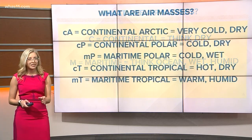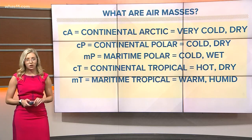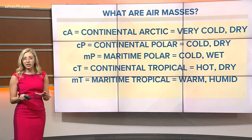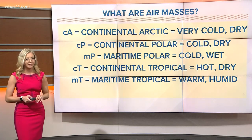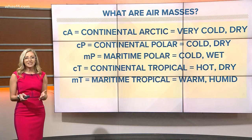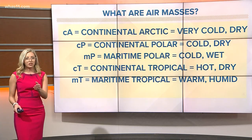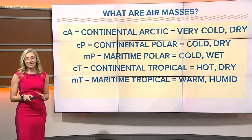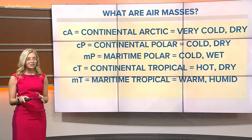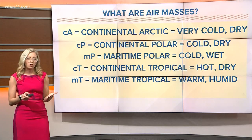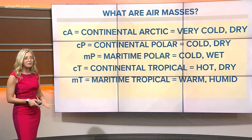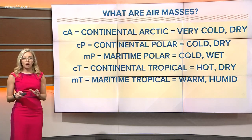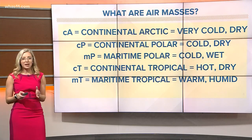Now let's put them together. cA is continental arctic — dry and extremely cold. cP is continental polar — dry and cold, but not quite as cold as arctic. mP is maritime polar — think wet and chilly. cT is continental tropical — dry and warm to hot, kind of like a desert. And mT is maritime tropical — hot, warm, and humid.